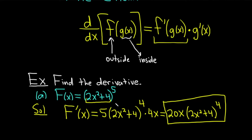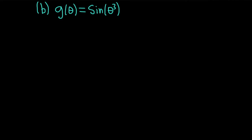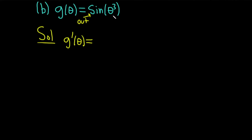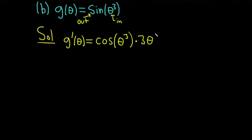Really nice application of the chain rule. Let's do some more examples. Part B, we have g of theta equal to the sine of theta to the third power. So g prime of theta... let's identify our outside and our inside functions. Our outside function is going to be the sine function, and our inside function is going to be theta cubed. We take the derivative of the outside — the derivative of sine is cosine — and you evaluate it at the inside, leaving the inside alone. Then times the derivative of the inside. Using the power rule, we bring down the 3, then subtract 1 from the exponent, so you get 2.